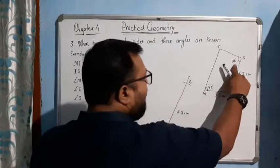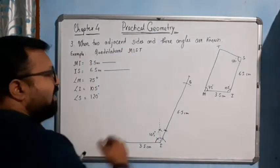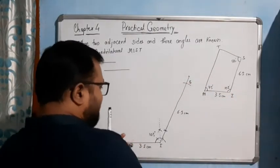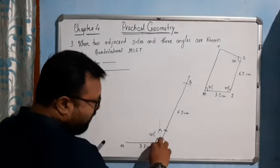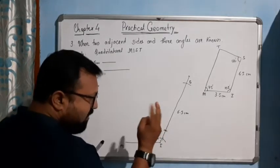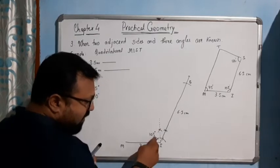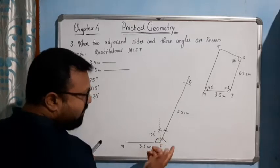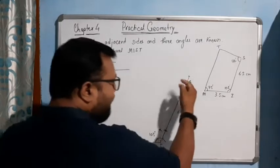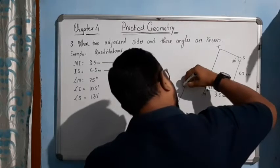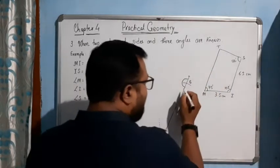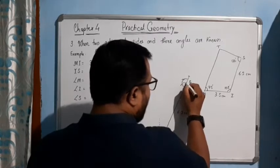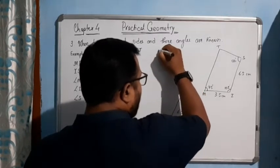Now draw 120 degrees at S in this direction. From point S, place the pin and put an arc without changing the compass. Place the pin at the arc point and put one arc — this gives 60 degrees. Place the pin again and put another arc — another 60 degrees. So 60 plus 60 gives you 120. Join this line in the direction of the arrow.